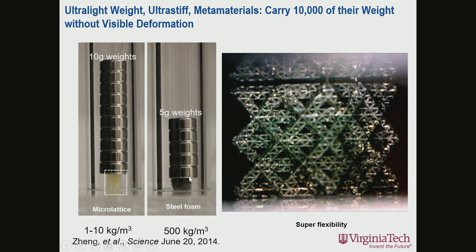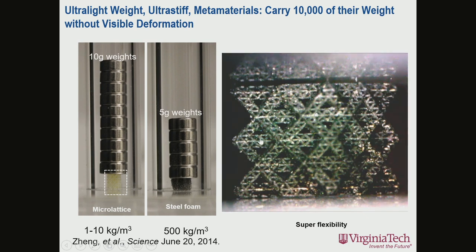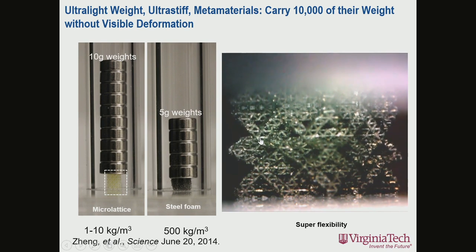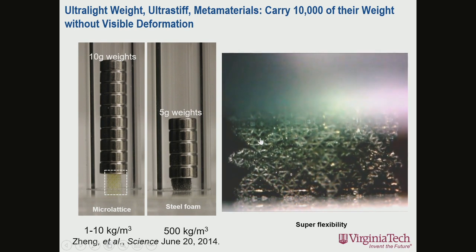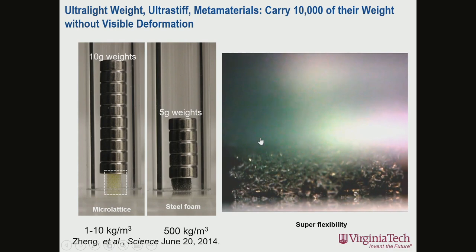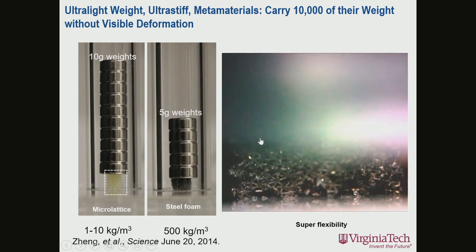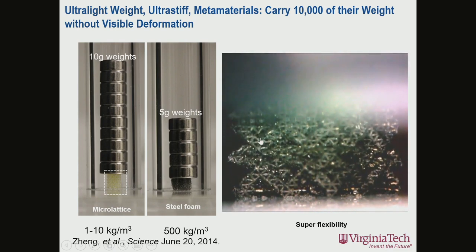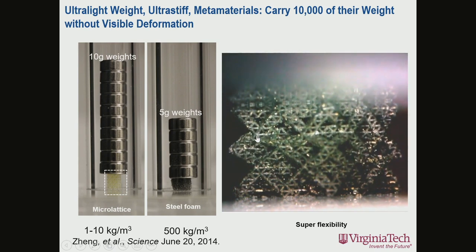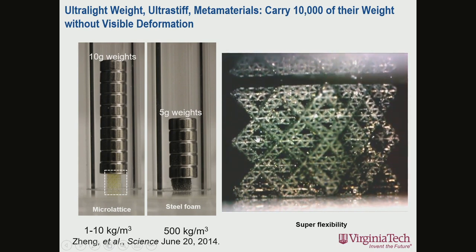We coated this micro-lattice, depositing a thin layer of nickel phosphorous — an amorphous metal that is actually quite brittle — then etched away the polymer, leaving behind a hollow-tube metallic lattice. When we crush it, just like crushing a can of Coke, you can see that no matter how many times you crush it to over 80–90% compression, it always recovers. And it doesn't matter which direction you crush it — it can always recover.